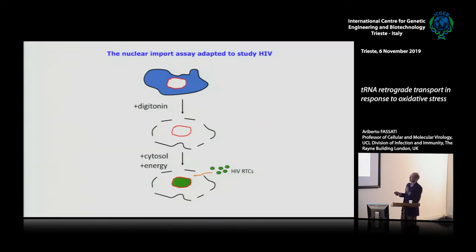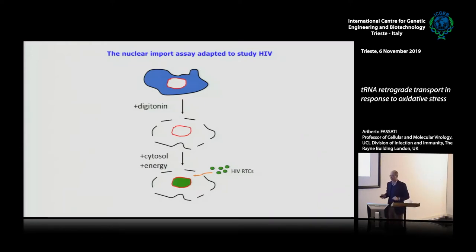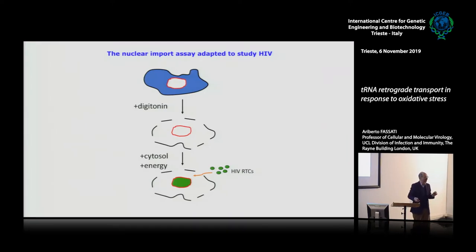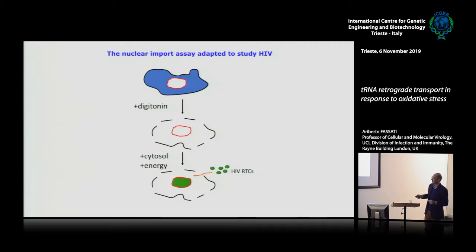In this assay, you have a cell and permeabilize it using digitonin, which only permeabilizes the plasma membrane by solubilizing cholesterol — there is no cholesterol on the nuclear envelope. You make holes in the plasma membrane, wash out cytosolic contents, then reconstitute the system using either recombinant proteins or cytosol. You add a fluorescently labeled cargo and study whether the components you add stimulate nuclear import of proteins into the nucleus.